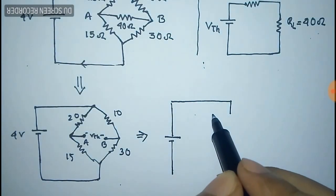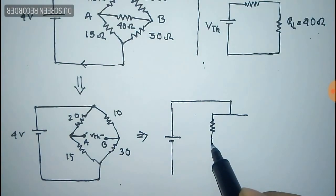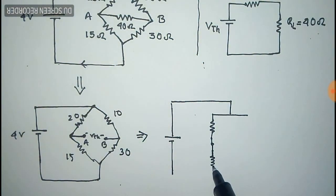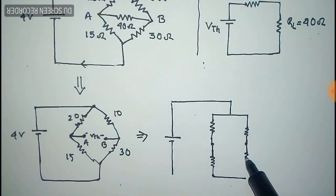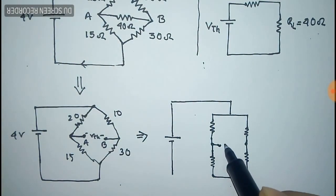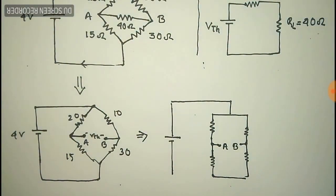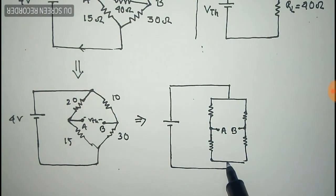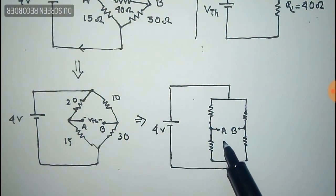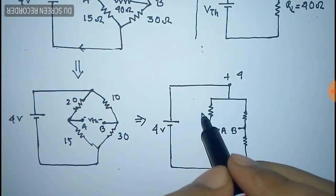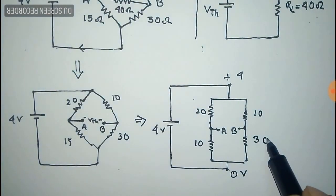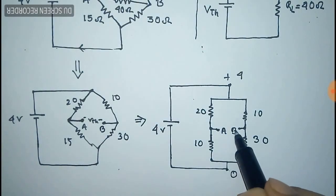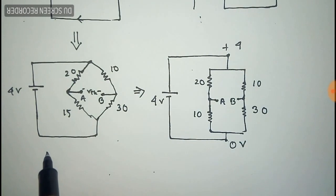This is the equivalent circuit — we can redraw the circuit like this. This is terminal A and this is terminal B. There exists 4 volts as the source, and 0 volt at the other end. The resistances are 20, 15, 15, 10, and 30 ohm. Now we have to calculate the voltage between A and B, which is V_thevenin.